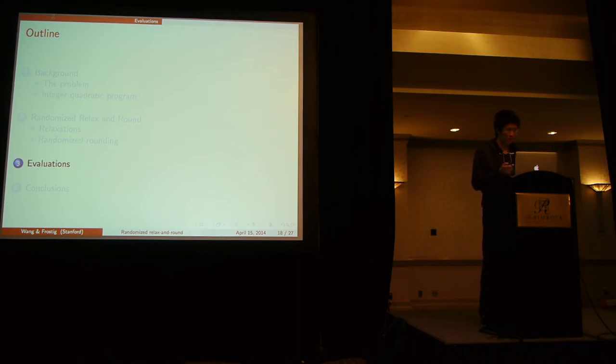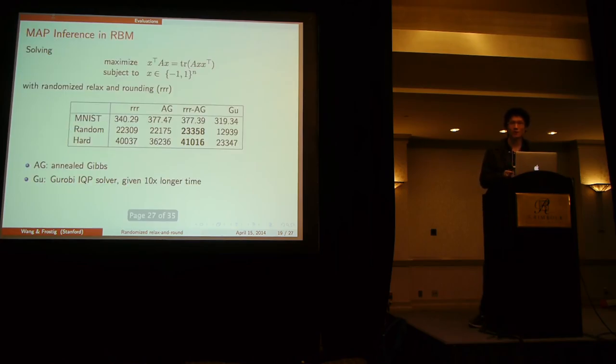There is a rich amount of theory behind it, but I guess we care more about if the method works. So the first test just solved the MAP inference problem in RBM. So MNIST is an A corresponding to an RBM training, MNIST random is random A, and hard is a constructed instance of A that's hard for Gibbs. And we compare to annealed Gibbs and Gurobi, which is an off-the-shelf QP solver. And the relaxation method compares well to the other methods here.